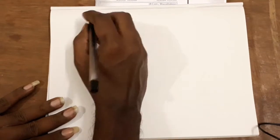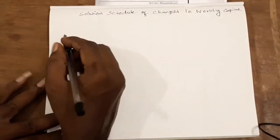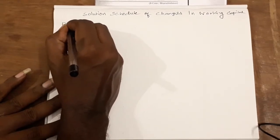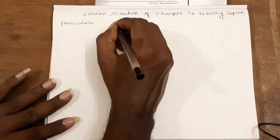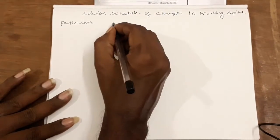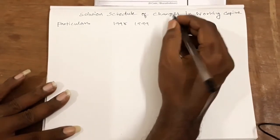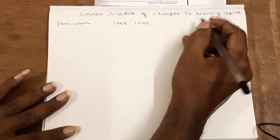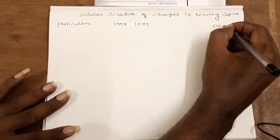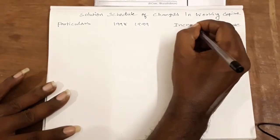First, we will go to the problem and then to the solution. The solution format uses a particulars column, with years 1998 and 1999, along with columns for increase and decrease.